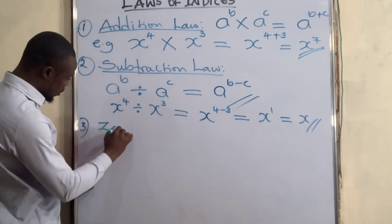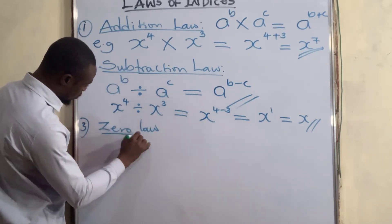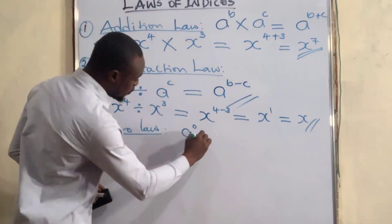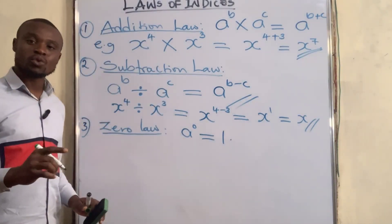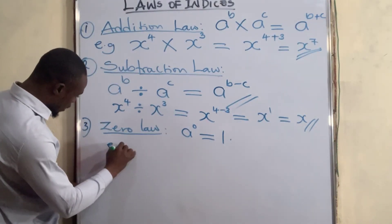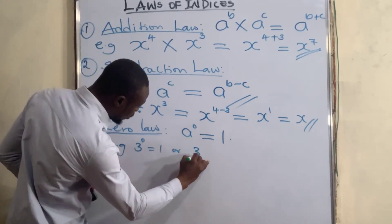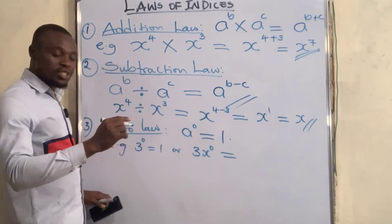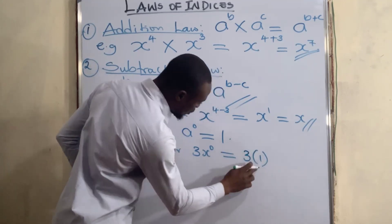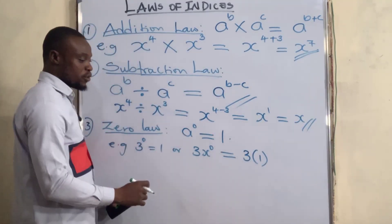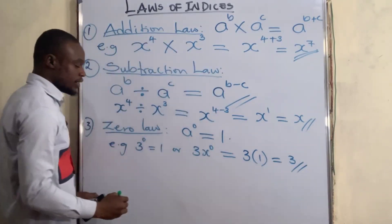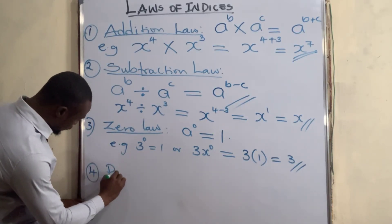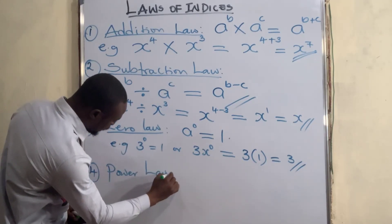The third law is the zero law. The zero law states that any number to the power of zero is equal to one. For example, three to the power of zero equals one. Also, 3x to the power of zero — here three is not raised to the power of zero, only x is. So we have three times one in brackets, since x to the power of zero equals one. Therefore three times one equals three.